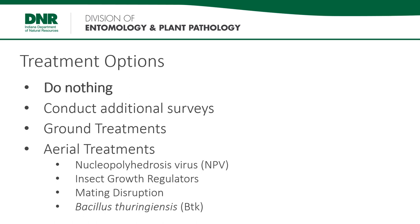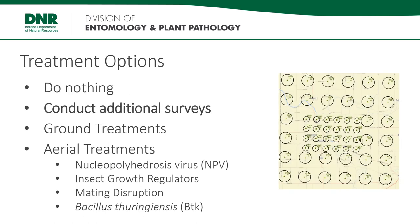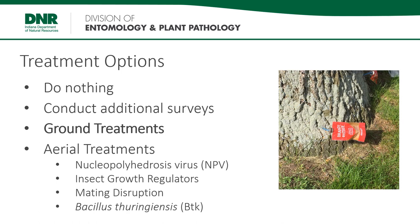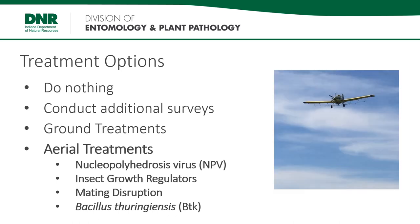If a population is too far behind the STS zone or is already showing pressure from natural enemies, doing nothing may be an appropriate action. In some cases we might have trap catches but are unable to locate the Spongy Moth population, and a heavier grid of traps may be placed to provide more information. When Spongy Moth populations are found in very limited areas, a ground treatment might be used — this can consist of mass placement of survey traps, spraying egg masses with oil, or treating single trees on a site. Finally, we can use aircraft to put applications over larger areas, and there are four different options for aerial treatments.